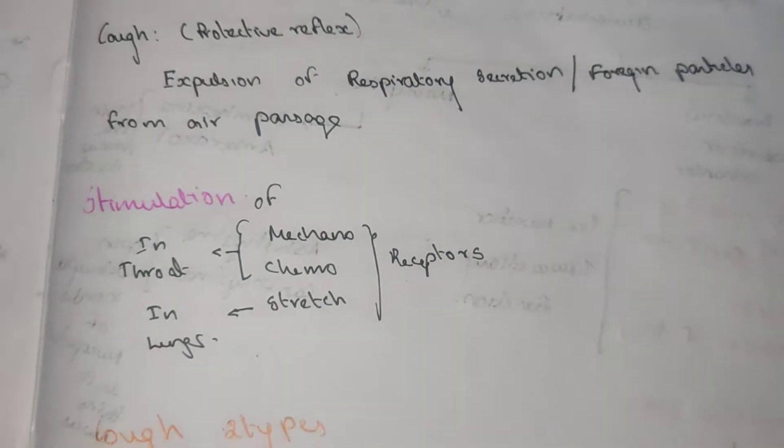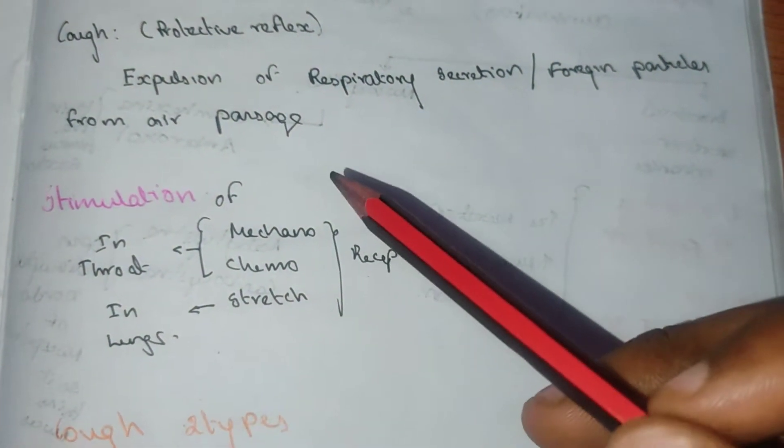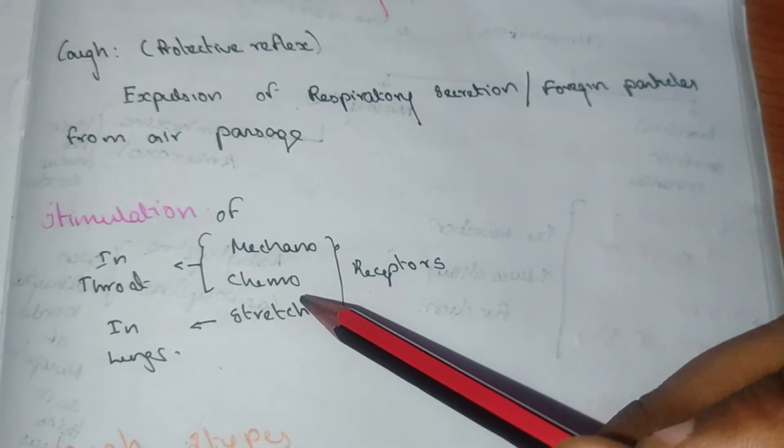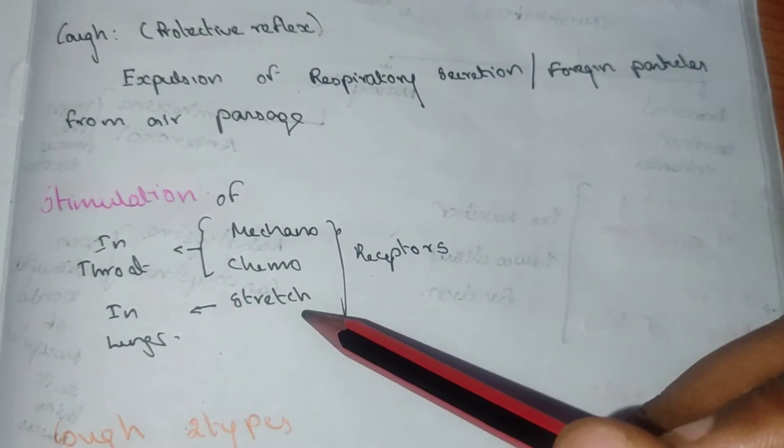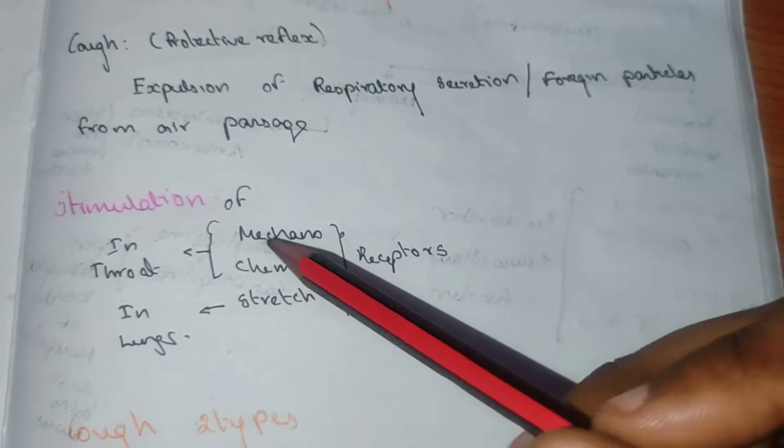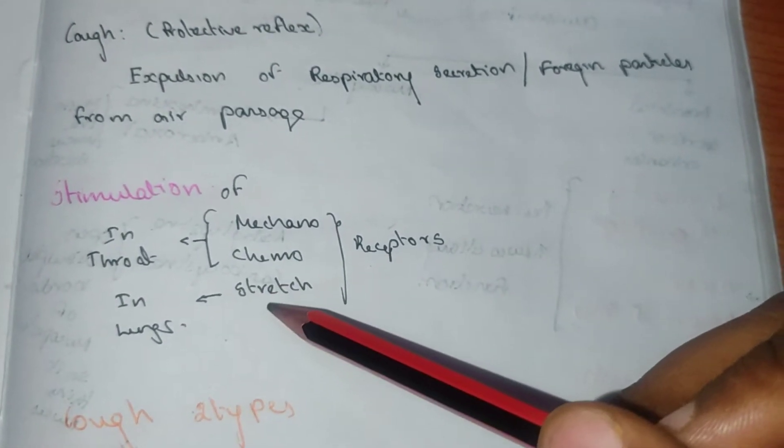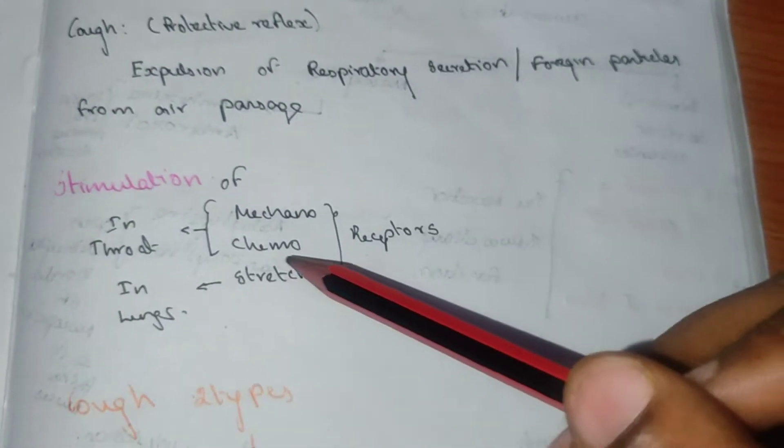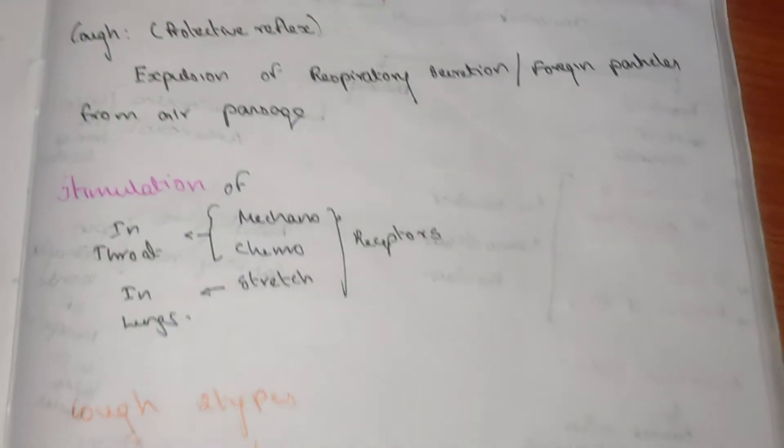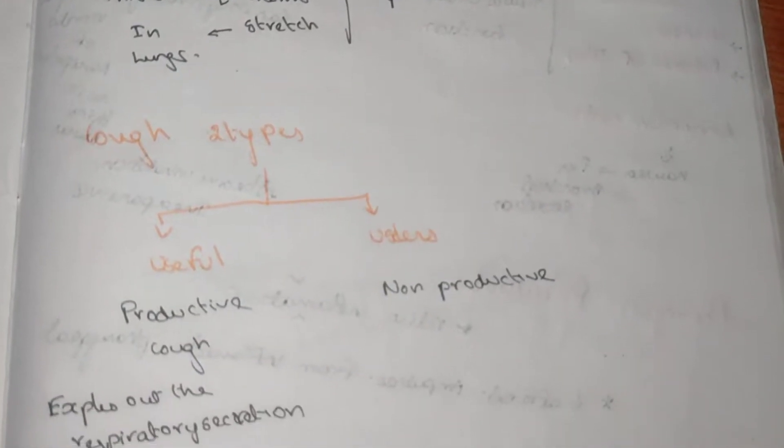Stimulation of the cough is due to mechano, chemo, and stretch receptors. Mechano and chemo receptors are in the throat and lungs. Stretch receptors are present in the lungs. These stimulations cause the cough. There are two types of cough.